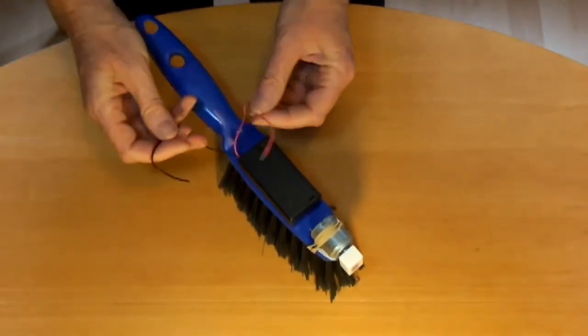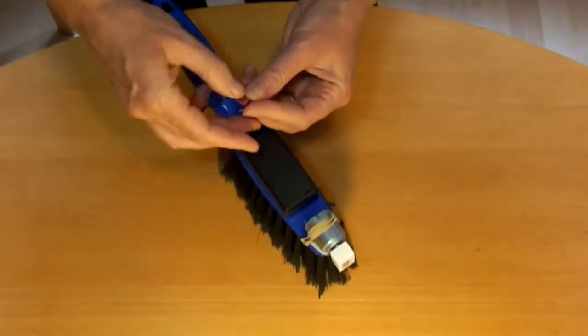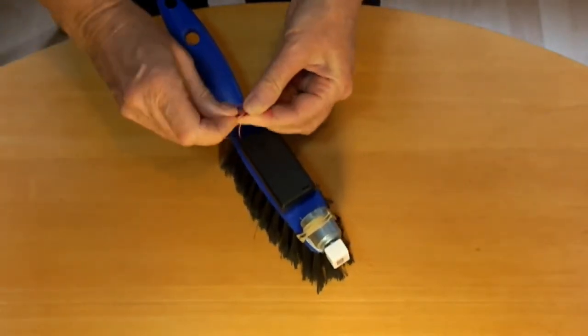Tie the two wires from the battery box in a reef knot. This is so that the metal ends are less likely to touch one another and cause a short circuit.